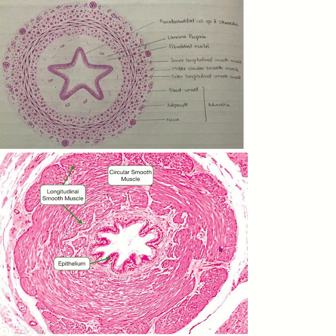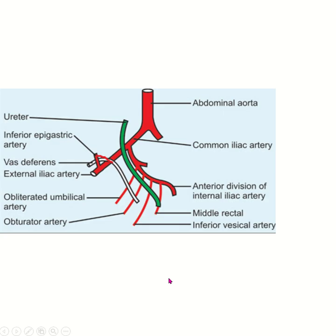The muscular coat is very thick considering the tubular structure. There is a three-layer arrangement of smooth muscle cells: inner and outer longitudinal layers and a middle circular layer. The outer part is covered by connective tissue, the adventitia.